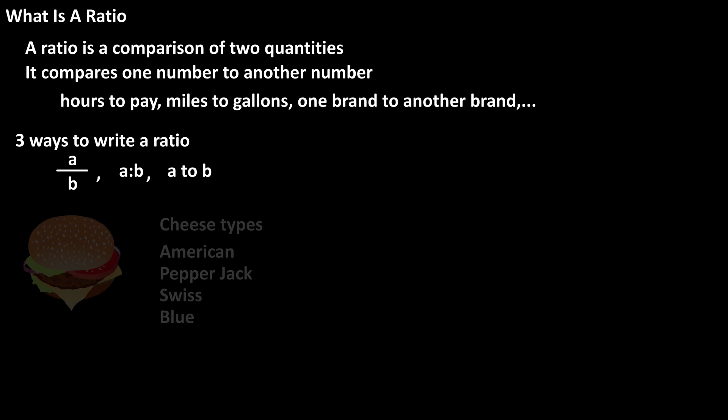As an example, let's say that a burger joint has four different cheeses you can get on a burger: American cheese, pepper jack cheese, Swiss cheese, and blue cheese. On a given day, they sell 40 burgers with American cheese, 60 with pepper jack, 25 with Swiss, and 15 with blue cheese.